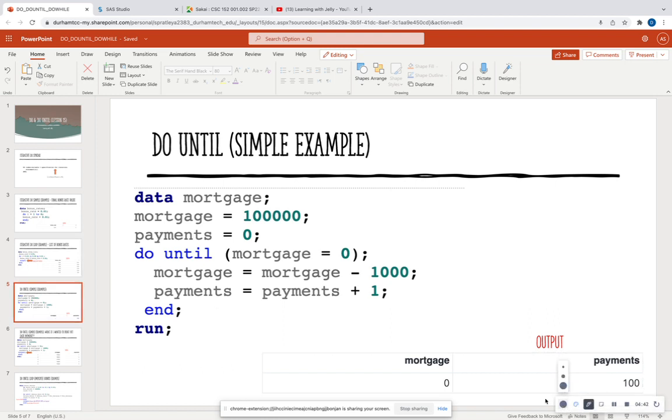In this case, I have my initial mortgage value to be $100,000. And I'm starting off with zero payments. Say, for instance, I want to figure out how many payments it's going to take to pay my mortgage in full. So I'm going to do until my mortgage is zero. I'm going to subtract $1,000 from my mortgage because I'm going to pay $1,000 on every payment, and then I'm going to add one to my payments.